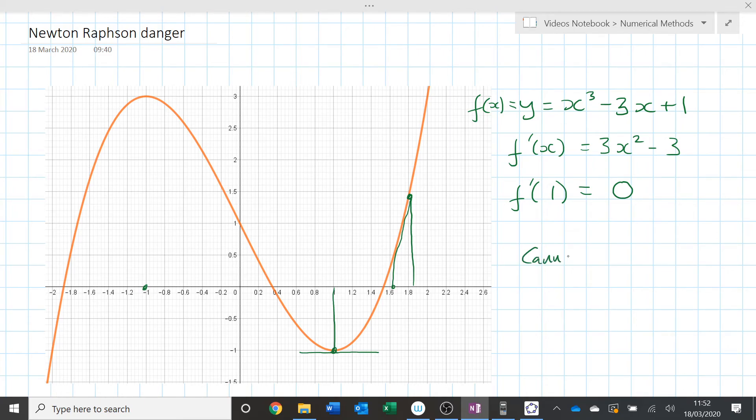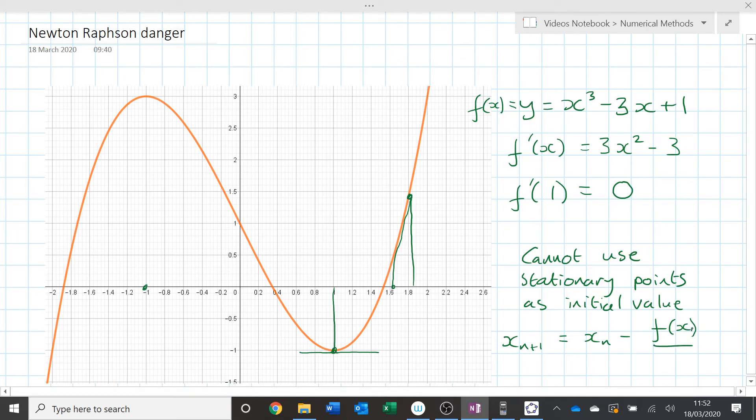So cannot use stationary points, points of inflections also can't be used, stationary points as initial value. You would see that if you try to put it into your iterative formula which I remind you is xn+1 is equal to xn minus f of xn over f dash of xn.